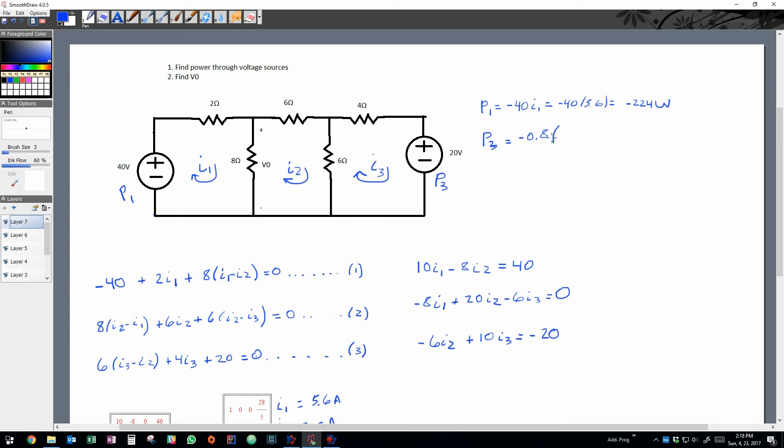So just one way of kind of doing a sanity check on this: whenever you do these equations, just remember voltage sources are actually sourcing power to the circuit, so the power for the voltage sources should always be negative because they're actually giving power to the circuit. Whenever you have a positive power, that actually means power is being dissipated through that element.